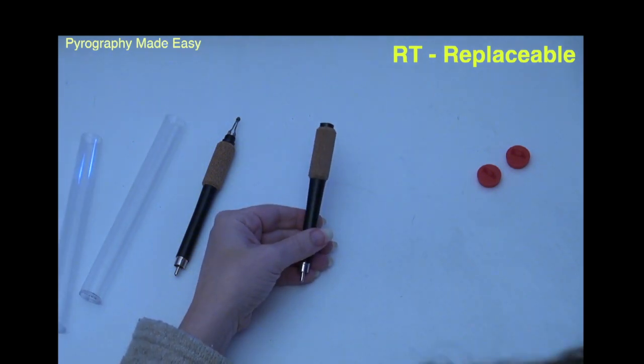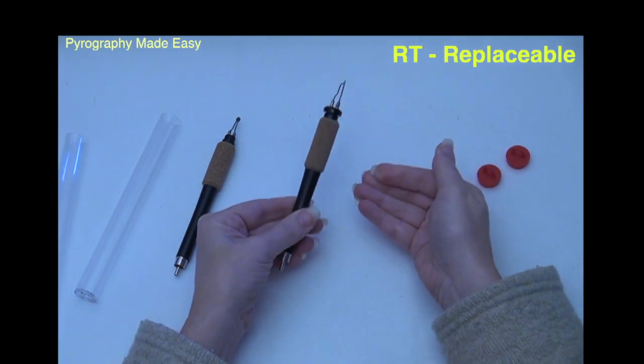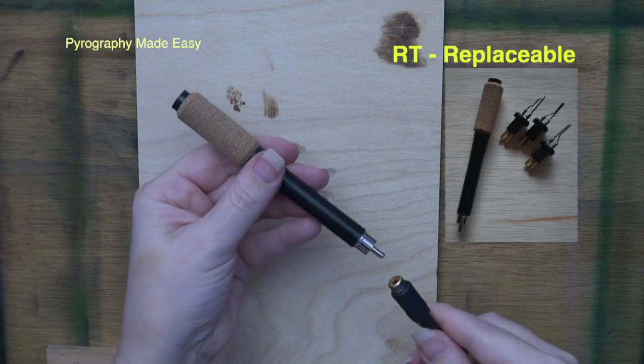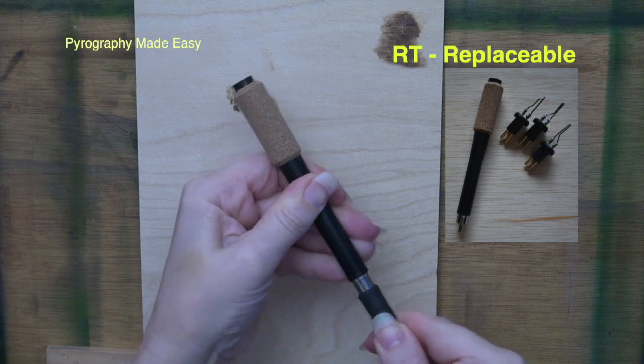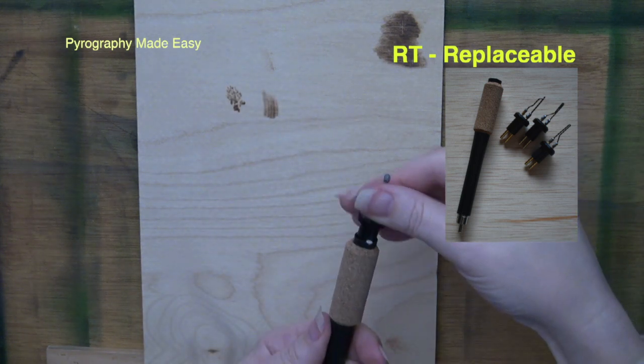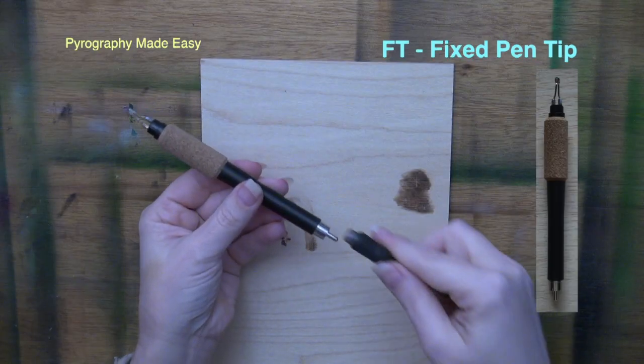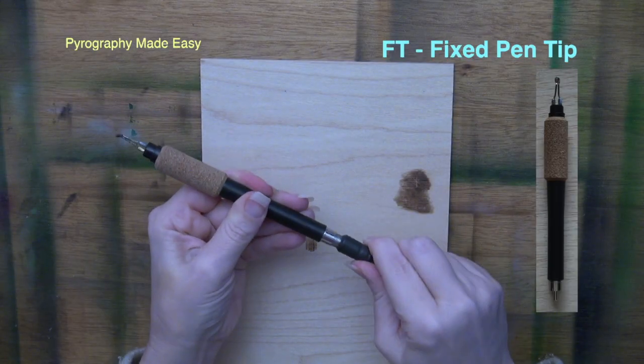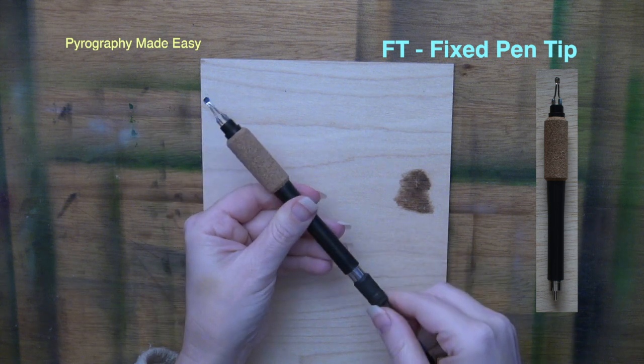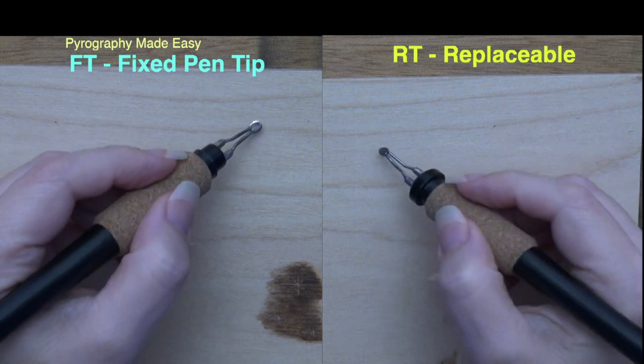To use, you just insert the pen tip you want into the handset. Both versions attach to the burner via a power cord that is plugged into the bottom of the handset. The big difference between the two is that you have to switch out the entire handset on the fixed tip system when you want to change pen tips. Which handset style is better?